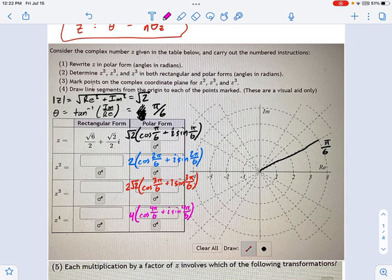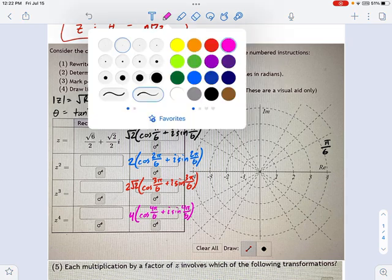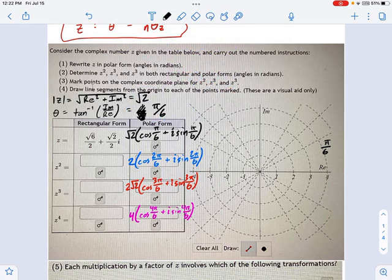Now, plotting these things is pretty easy. I think maybe the hard part, if there is one, is plotting the modulus correctly. Square root of 2 is about 1.4. So this first point I would put somewhere like this.